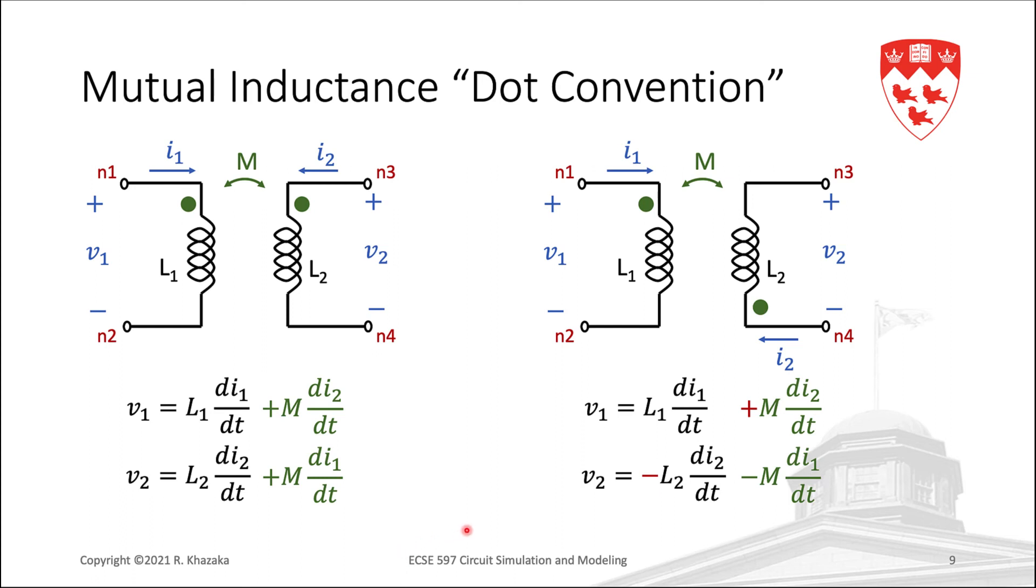Notice that we now have a positive mutual inductance in the first equation. But in the second equation, we have minus L2 di2 by dt. The minus sign here is also consistent with the passive sign convention. After all, we have defined I2 as entering L2 from the negative terminal, at least based on how V2 is currently defined. So in order to keep using the standard form of the passive sign convention, let us flip the orientation of V2.